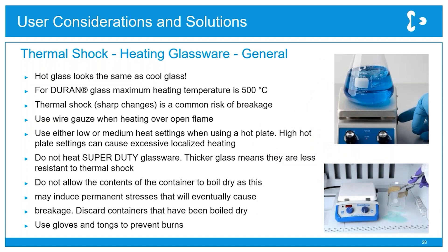Some general tips for heating glassware: hot glassware looks the same as cooled glassware, so it's really important not to touch it — use protective gloves. Borosilicate glass can typically be heated up to 500 degrees, but this may be limited by accessories like a plastic cap. Borosilicate is quite resistant to thermal shock, making it well suited to quick temperature changes like freezing. Ideally a water bath should be used for heating over flames. If using a hot plate, start at the lowest setting and add glassware to that setting rather than starting on high.